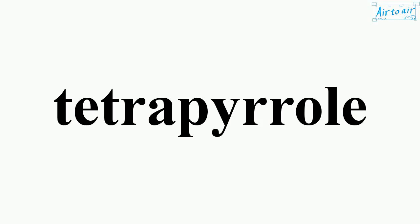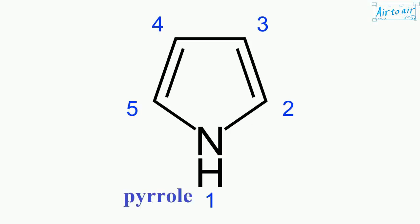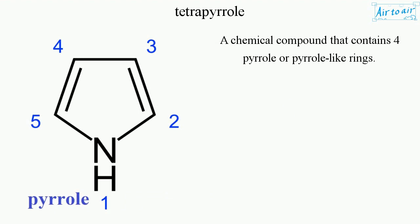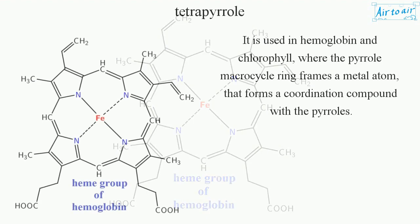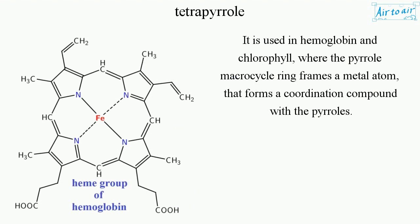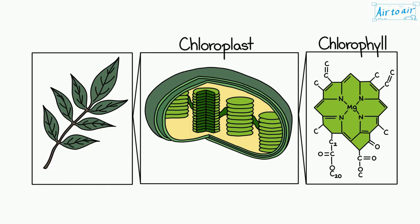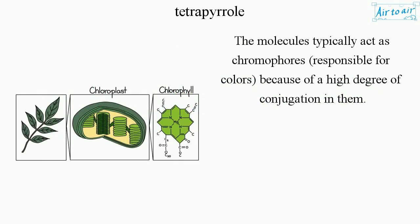Tetraphrol is a chemical compound that contains four pyrrole or pyrrole-like rings. It is used in hemoglobin and chlorophyll, where the pyrrole macrocycle ring frames a metal atom that forms a coordination compound with the pyrroles. The molecules typically act as chromophores responsible for colors because of a high degree of conjugation in them.